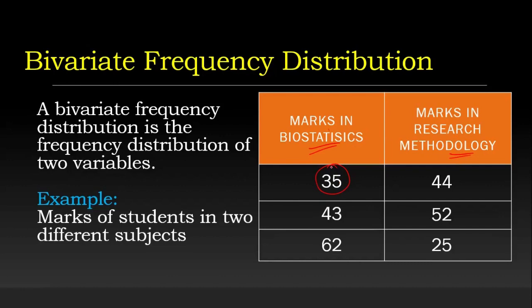For example, marks scored in Biostatistics by Student 1, Student 2, Student 3 — both values are paired. A particular student scored 35 in Biostatistics and the same student scored 44 in Research Methodology, and so on for three students. When this type of data is given, it is called a bivariate frequency distribution.